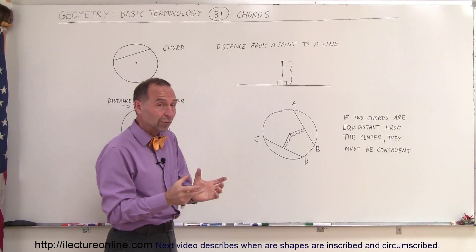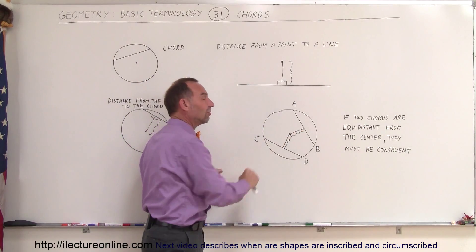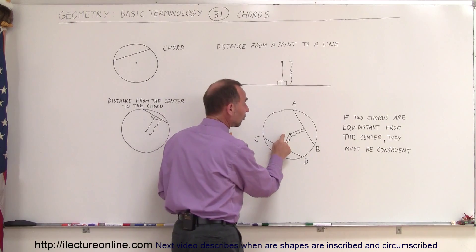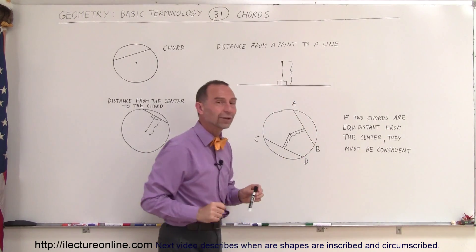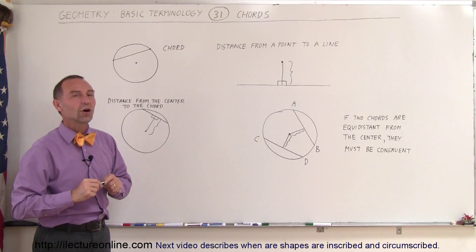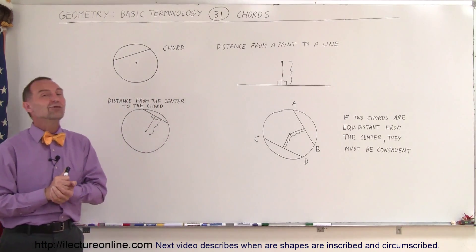So, if you have a situation where you have two chords inside a circle and those two chords are the same distance away from the center, which means the distance from the center to the chord, and when that distance reaches the chord perpendicular to the chord, then we can say the two chords are congruent to one another. That is a good thing to know in geometry.